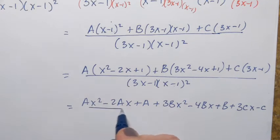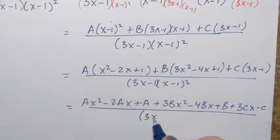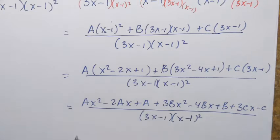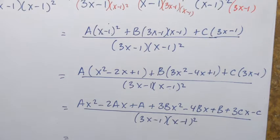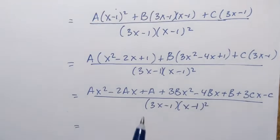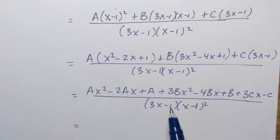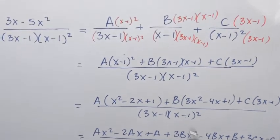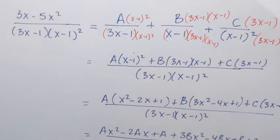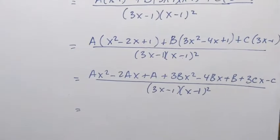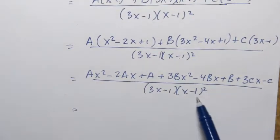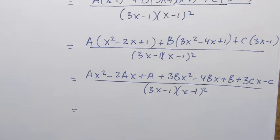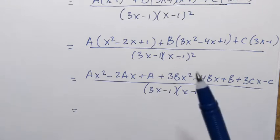Now I need to compare numerators. I want to show that the original rational expression's numerator equals this expanded numerator, which will help me find A, B, and C. I need to find A, B, and C such that the numerators are the same — since the denominators are already the same.